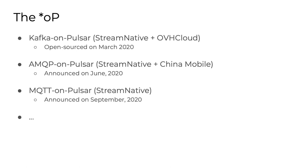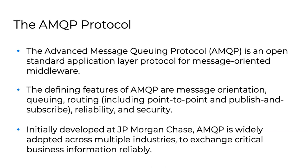Historically, our first suite was what we call the 'on Pulsar' protocols. The first was KoP — Kafka on Pulsar — released open source in 2020. In June we added AoP — AMQP on Pulsar, supporting version 0.9.1. We've also added MoP — MQTT on Pulsar. The future holds whatever comes next — we can speak these protocols quite well.